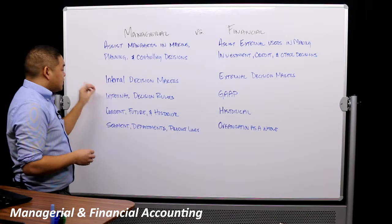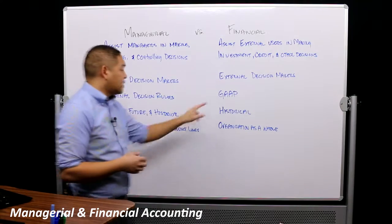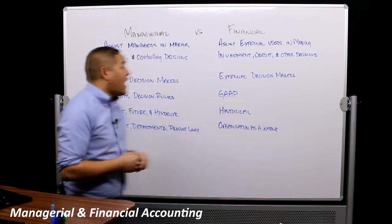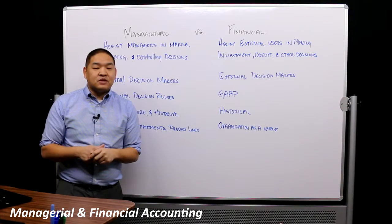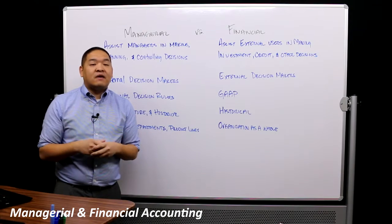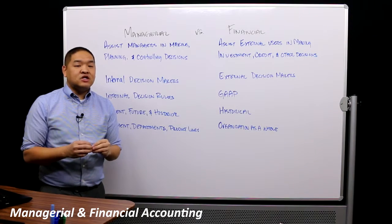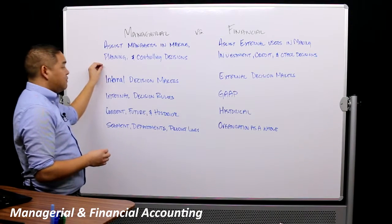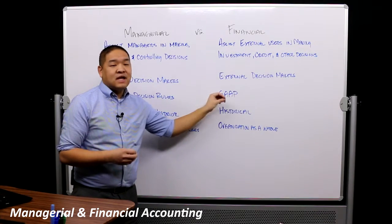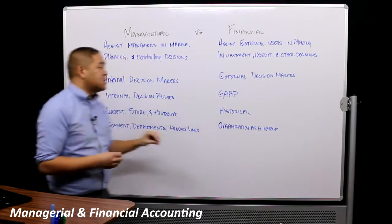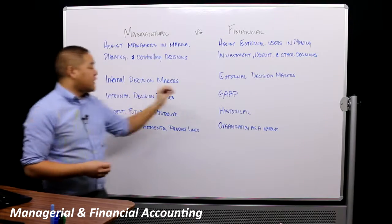With managerial accounting there really are no set rules. In financial accounting we have generally accepted accounting principles — GAAP — but we don't have that in managerial. We can use GAAP to prepare accounting information for managerial purposes, but at the end of the day we're trying to get useful information to management. We may not follow GAAP because it won't always give the most useful information, so managerial has a little bit looser rules than financial accounting.